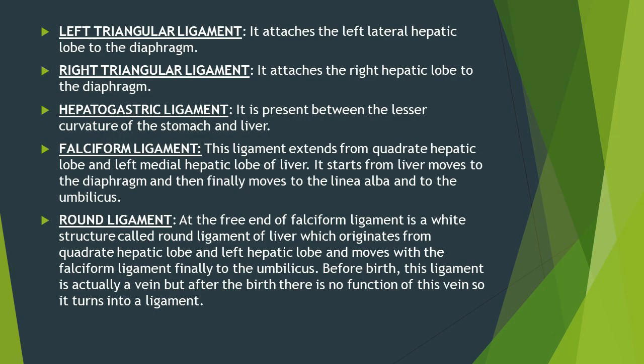The ligaments of the equine's liver are similar to those of the dog and ox. The hepatorenal ligament is present between the right kidney and quadrate lobe. The coronary ligament is present between the diaphragmatic surface and diaphragm. The left triangular ligament is present between the left lateral hepatic lobe and diaphragm. The right triangular ligament is present between the right lateral hepatic lobe and diaphragm. The hepatogastric ligament is present between the lesser curvature of the stomach and liver.